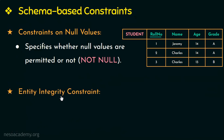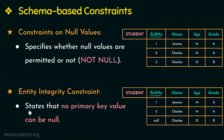The next constraint is the entity integrity constraint. This constraint states that no primary key value can be null. Why can't it be null? Because the primary key helps us to identify each tuple in the relation uniquely, and having a null value for the primary key implies that we won't be able to identify some tuples uniquely. So a null value won't help us identify a tuple uniquely, and therefore primary key value cannot be null.